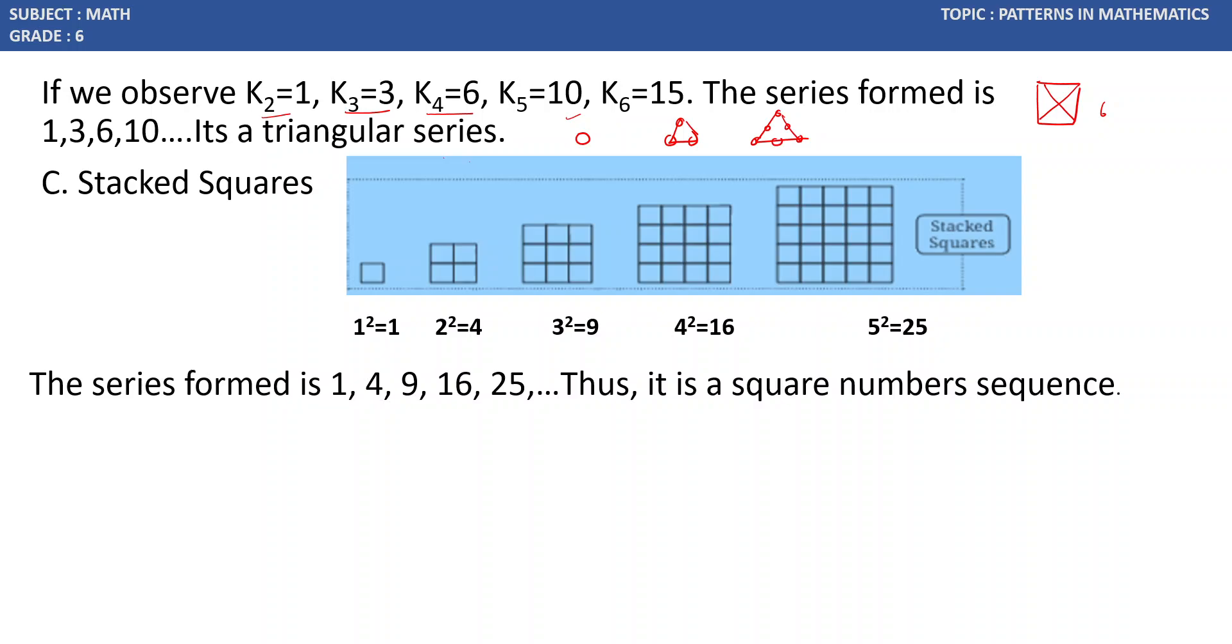Next is stacked squares. Stacked squares are a group of squares. For example, 1 square is 1, 2 square is 4, 3 square is 9, 4 square is 16, 5 square is 25. The series formed is 1, 4, 9, 16, 25. Thus, it is a square number sequence.